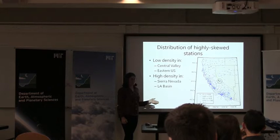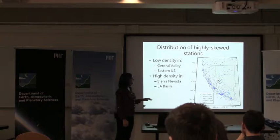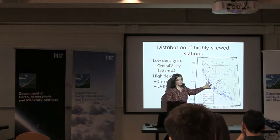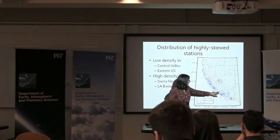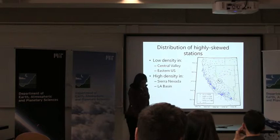California and Nevada are interesting regions to look at. The Central Valley has stations that are fairly well-behaved and don't have skewed outliers, whereas the eastern Sierra Nevada has a high density of skewed stations. There's also a fairly high number of skewed stations in the Los Angeles area.